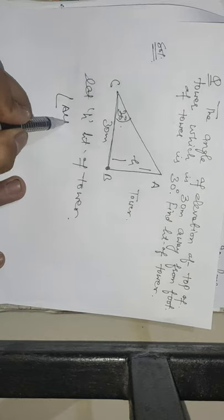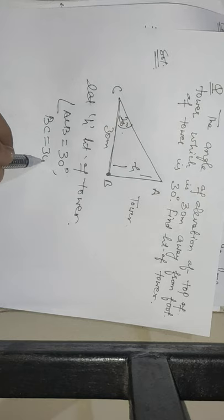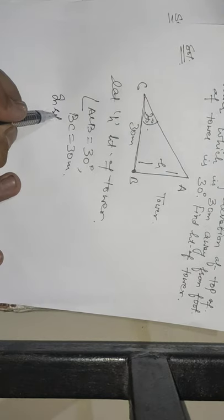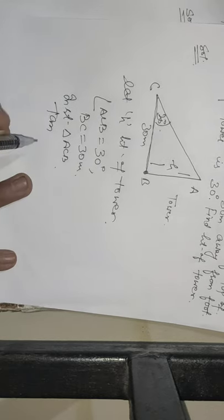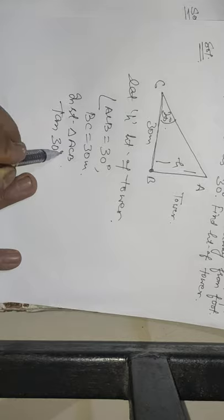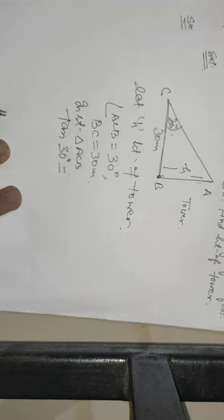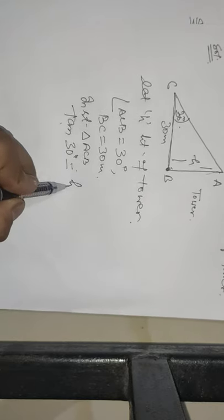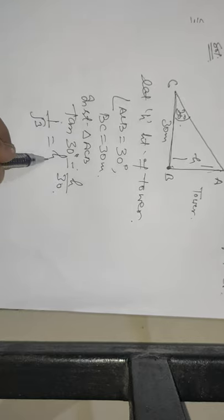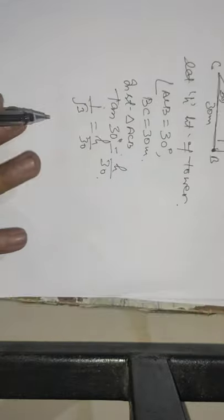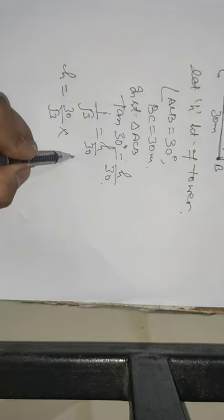Let the height of the tower be h. Angle ACB is 30 degrees, BC is 30 meters. Why did I put tan? Because we have perpendicular and base. Tan of 30 equals height upon base, which is 1 by root 3 equals H upon 30.